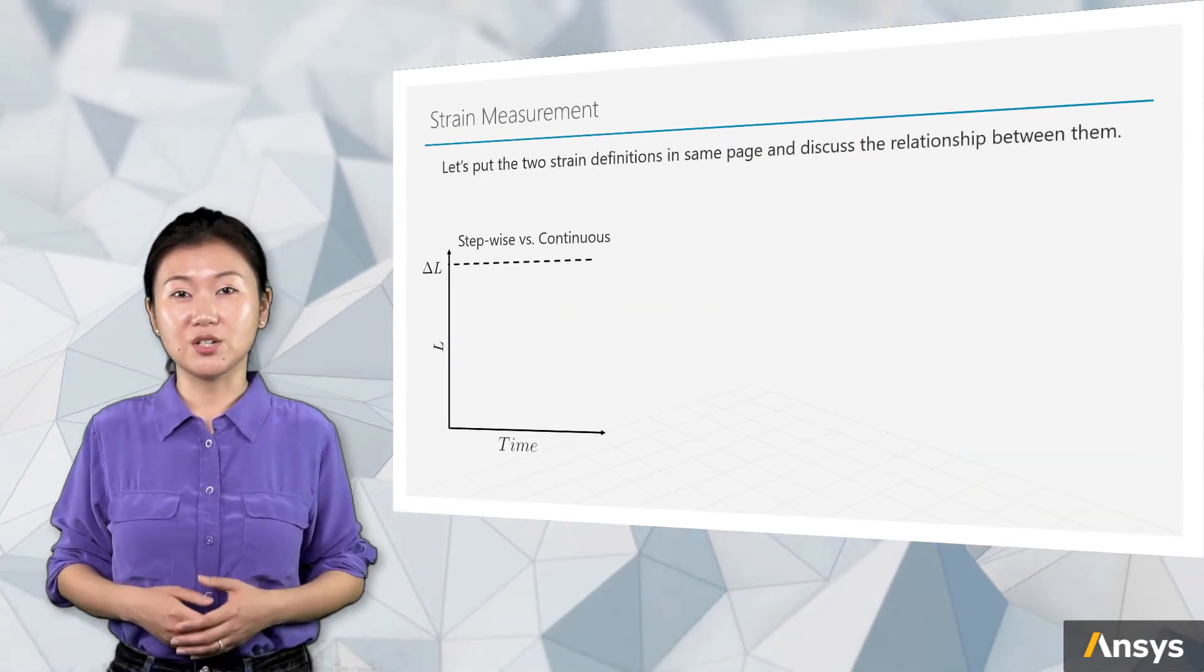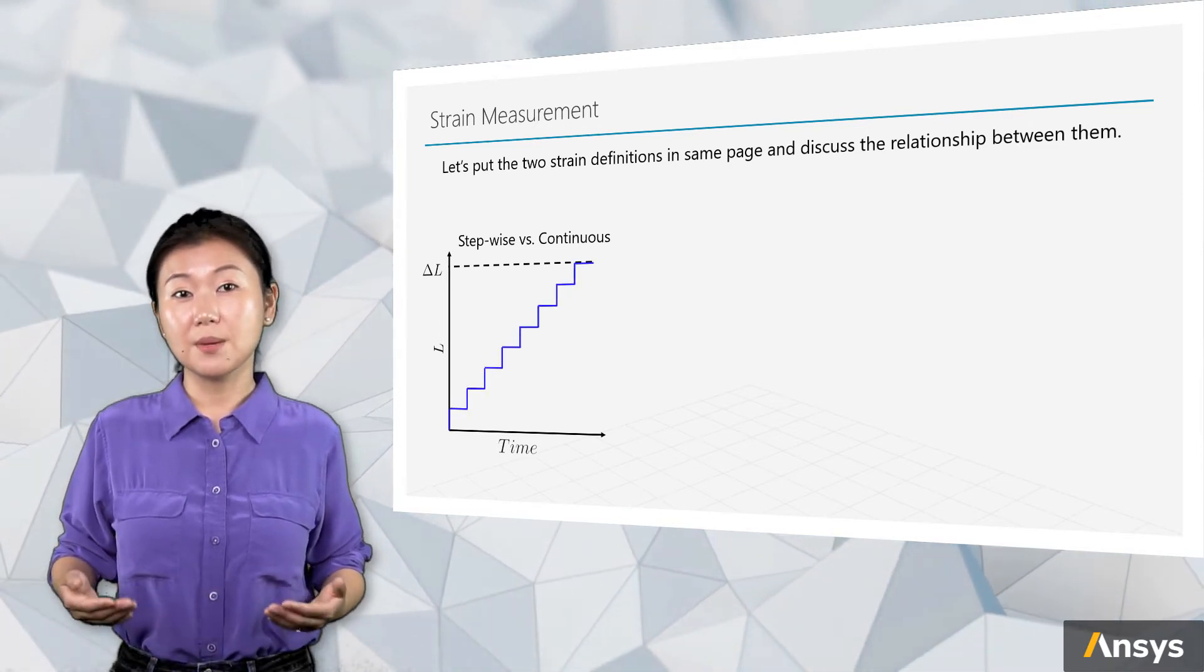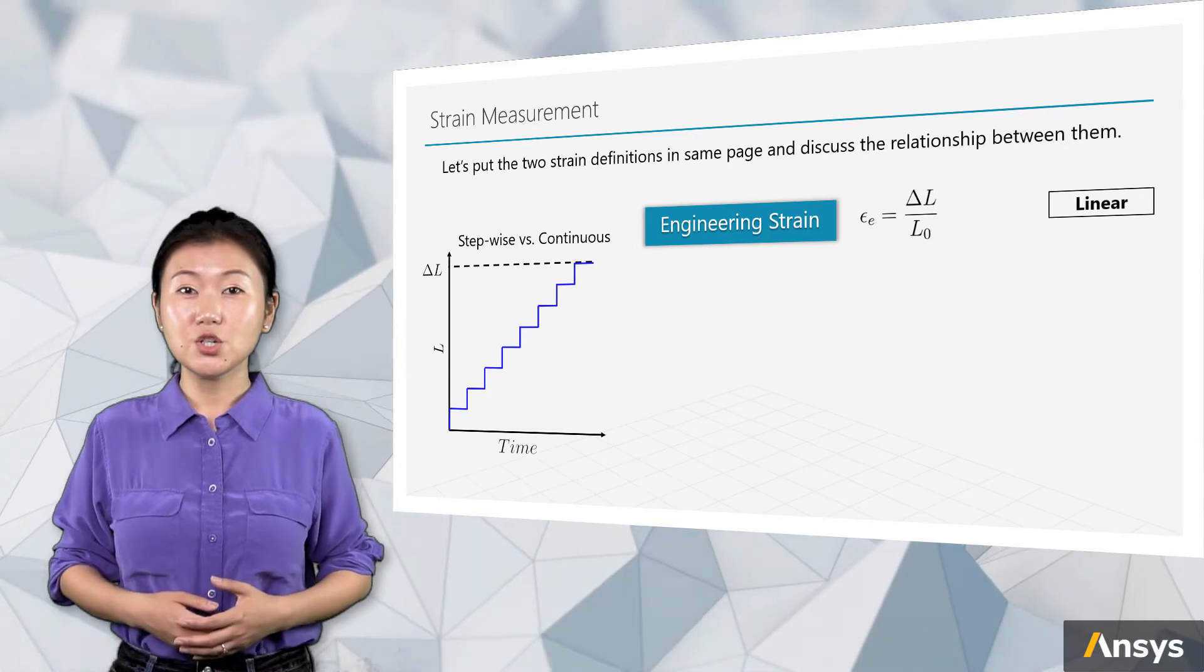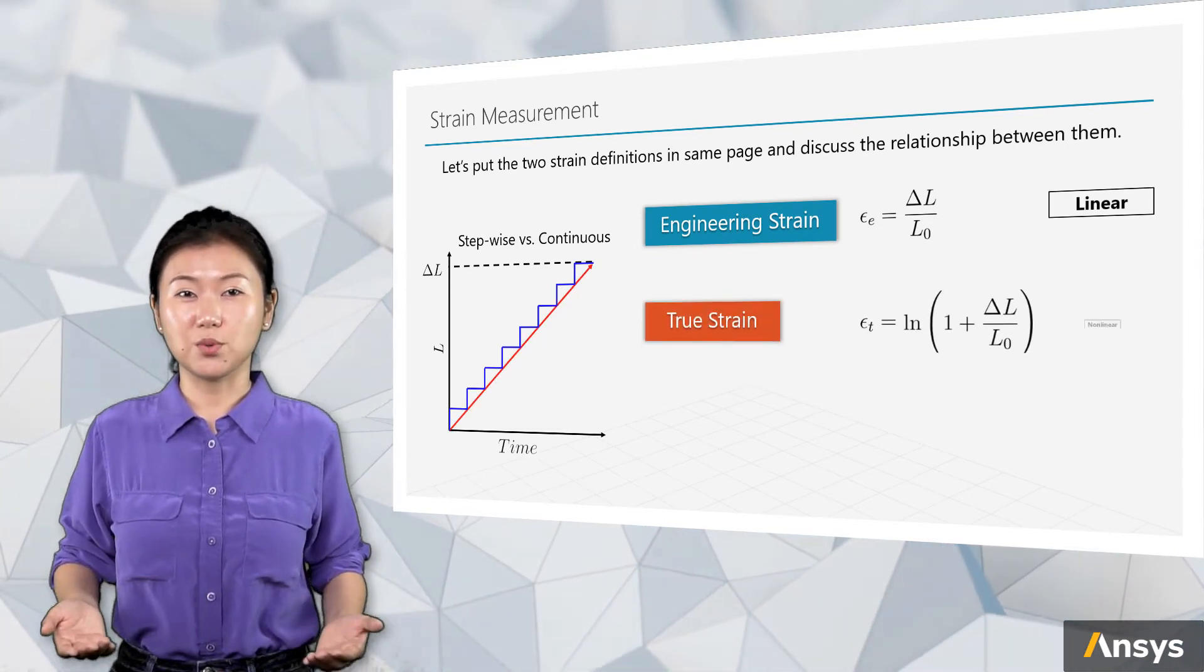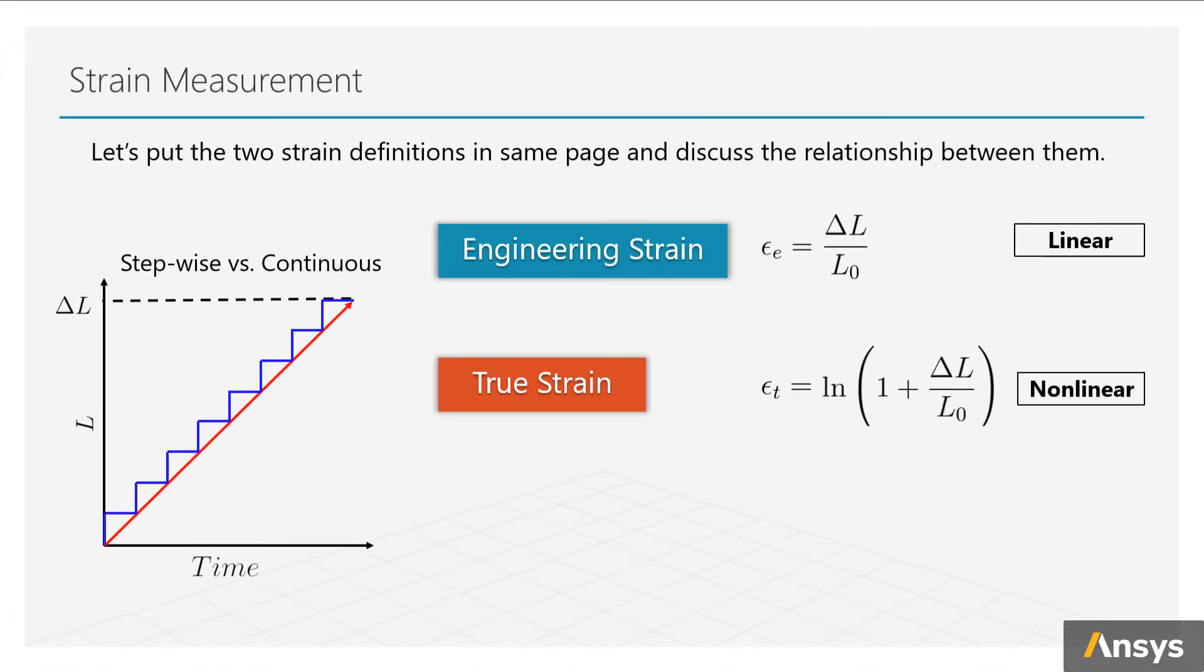A direct comparison between engineering strain and true strain here. Engineering strain uses step incremental deformation, which forms a linear strain. True strain uses continuous deformation, which forms a nonlinear expression. There is a relationship between these two strains. For true strain, the part in bracket is just the expression of engineering strain. So if we replace it by engineering strain, we have the relationship between these two strains.